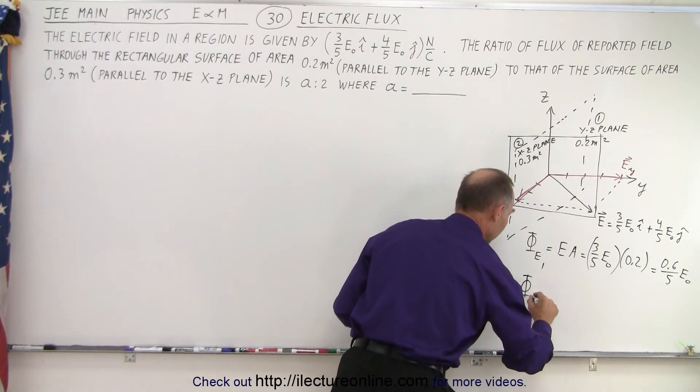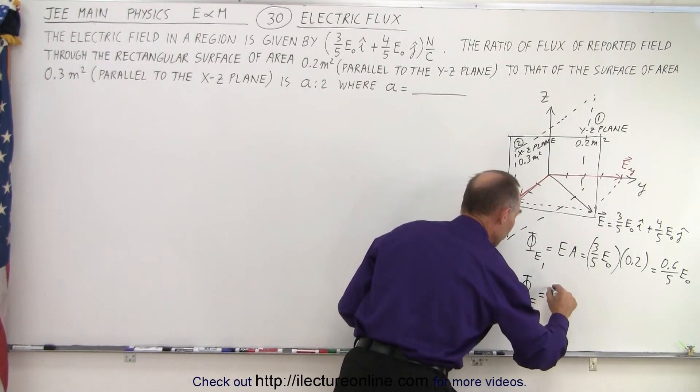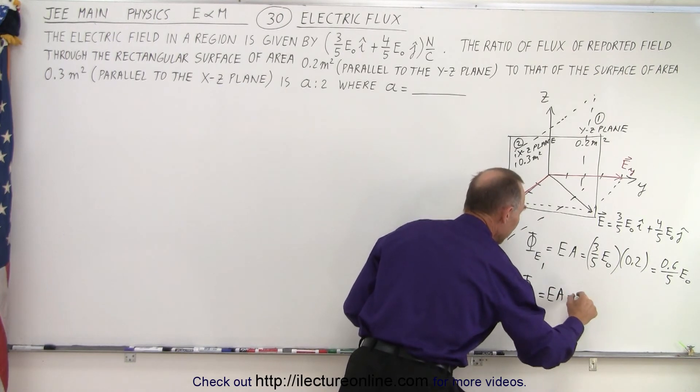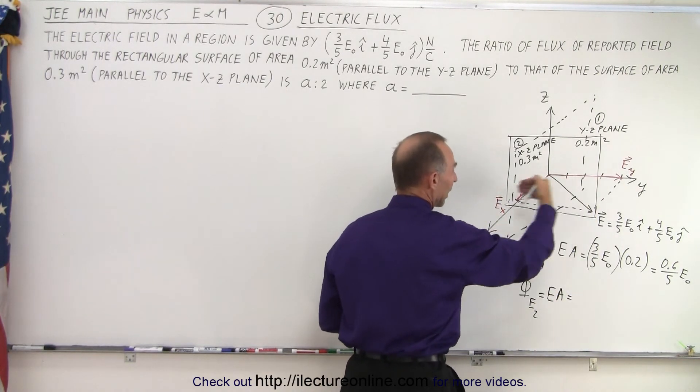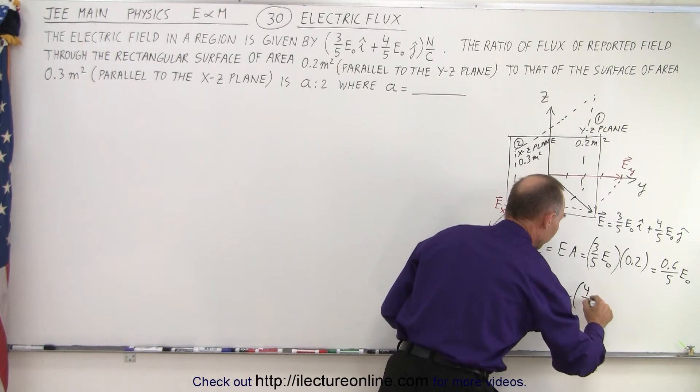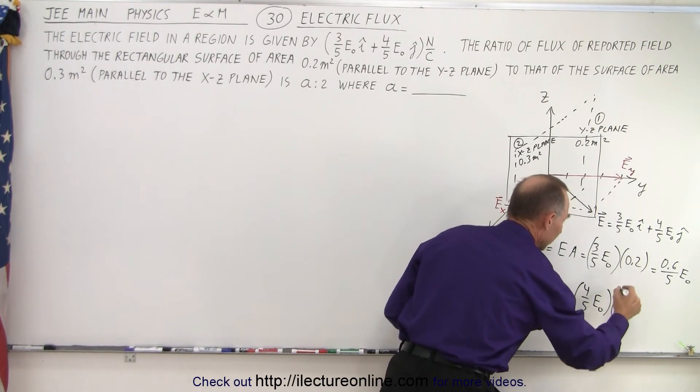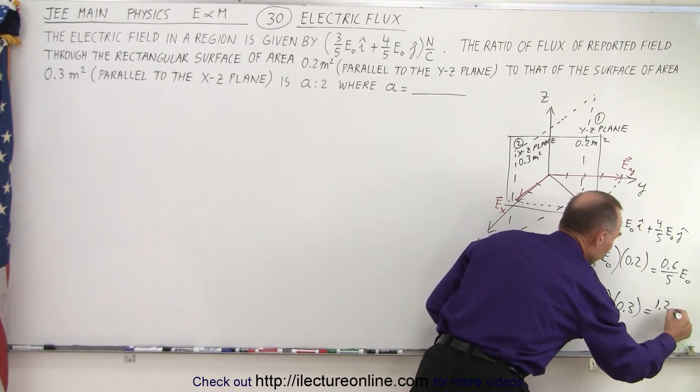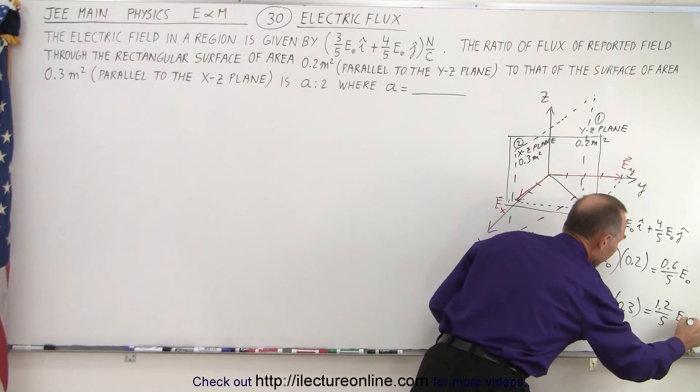And notice that the only component that goes through that plane is the Y component of the electric field. So that means that the flux, E2, is going to be equal to electric field times A. In this case, the electric field of the Y component is 4/5 E₀. And we'll multiply times the area, which is 0.3 square meters. So this is equal to 1.2 over 5 E₀.